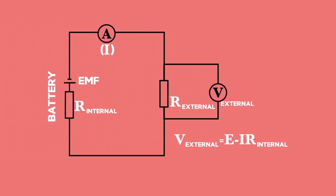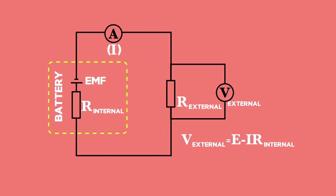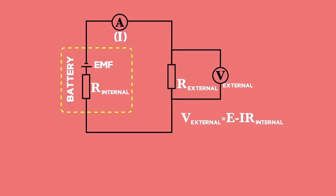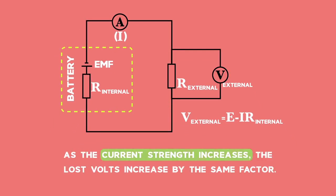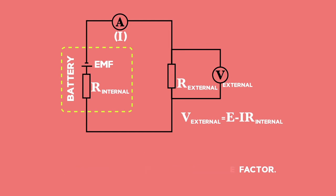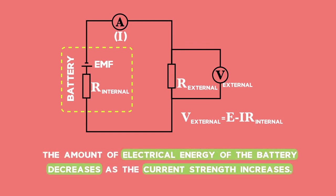The internal potential difference is directly proportional to the current in the circuit. This means that as the current strength increases, the lost volts increase by the same factor. Thus, the amount of electrical energy of the battery decreases as the current strength increases.